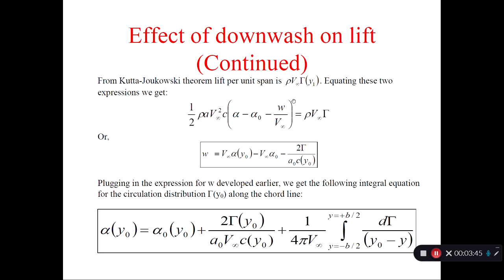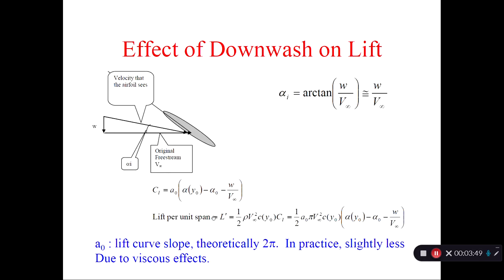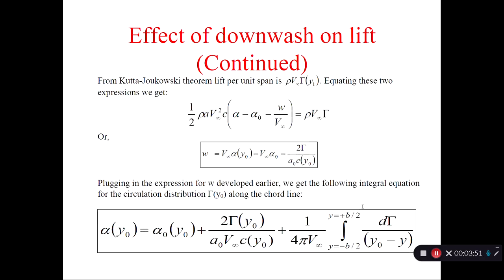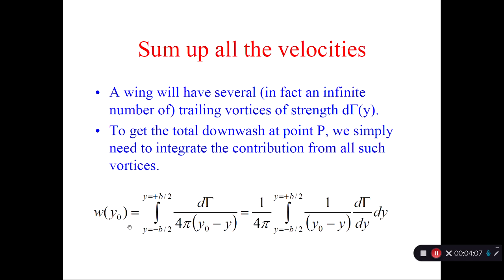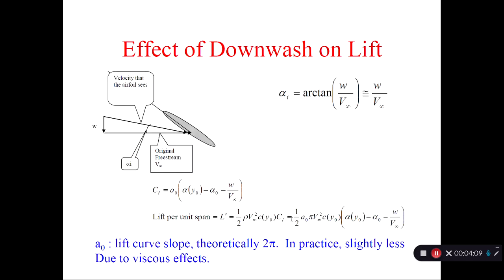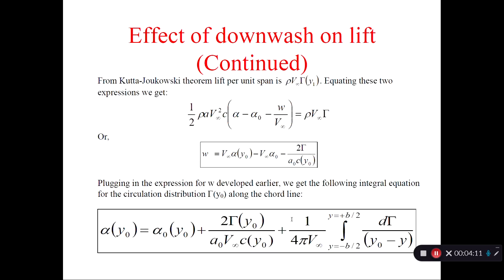So this is the lift from the previous slide, lift per unit span L'. But Kutta-Joukowski theorem says L' is ρ times V∞ times gamma. So this is Kutta-Joukowski theorem. This is from the previous slide. Now group everything so that w comes to one side. And then for the w, substitute this integral. Then you get Prandtl's lifting line equation.